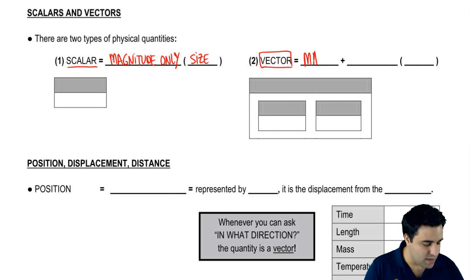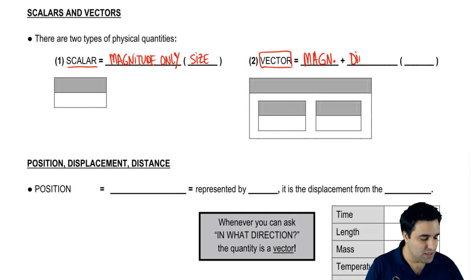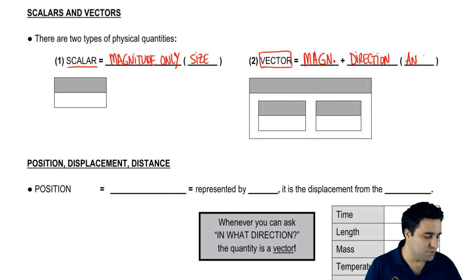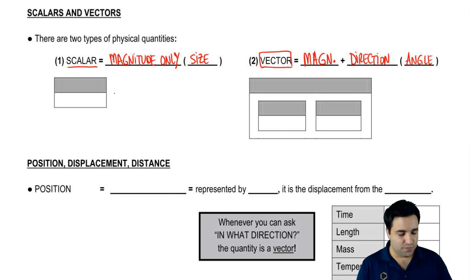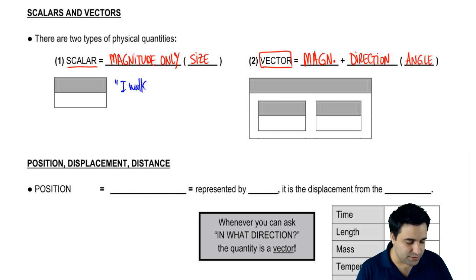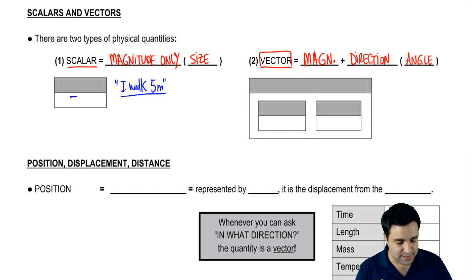A vector is a quantity that has more information than just that. It has the magnitude, the size, and it has the direction of a measurement. And direction in physics usually means angle. Not all physical quantities have direction — that's what we have to figure out. So for example, if I tell you I walk five meters, I'm telling you the magnitude of my walk, but I didn't tell you which direction. So all I'm giving you is the magnitude — that is a scalar.